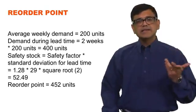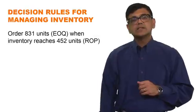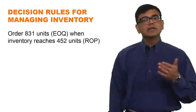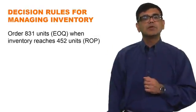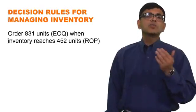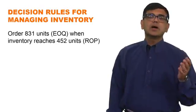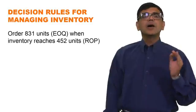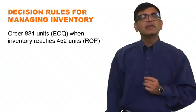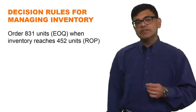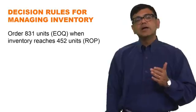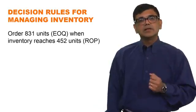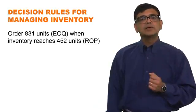The last part asks how to implement this continuous review system for Bintu. The decision rules are straightforward: order 831 units — the EOQ — whenever the inventory reaches 452 units. This is her complete continuous review inventory system, combining the EOQ for how much to order and the reorder point for when to order.